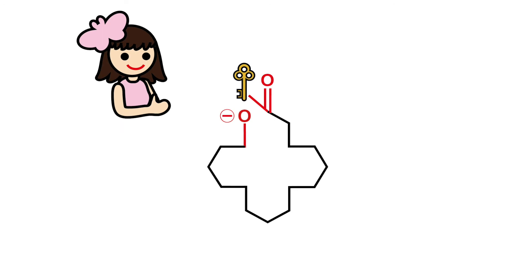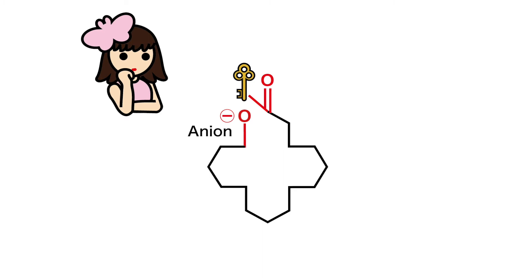Without the H, the O is negatively charged and is an anion. Conversely, the side with the key is positively charged and is a cation.